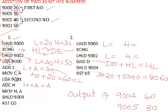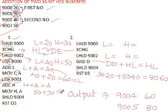Then we use LDA 9001 to load the value 30 from address 9001 into the accumulator. Then we use ADC H, which adds H plus A with carry. Since there was no carry from the lower byte addition, H holds 50, and 50 plus 30 equals 80. The result 80 is stored in the accumulator.